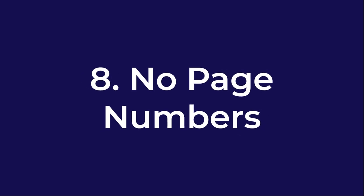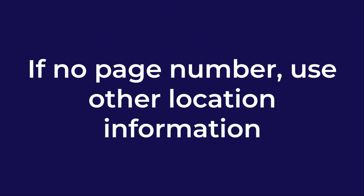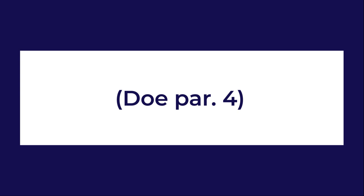Number eight: no page numbers. If a print source uses a labeling or numbering system other than page numbers, such as a poem or a script, use other location information like paragraph numbers or section headings. For example: (Doe, par. 4).